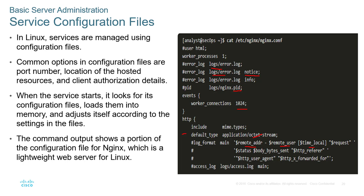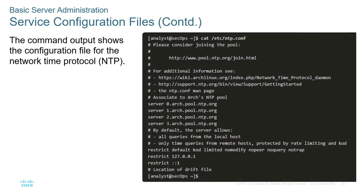The command output shows a portion of the config file for Nginx, which is a lightweight web server for Linux. For NTP, looking at an ntp.config file, pound symbols indicate commented/documented lines, and it shows four associated pool servers — server 0, 1, 2, and 3 — which are NTP-based servers.